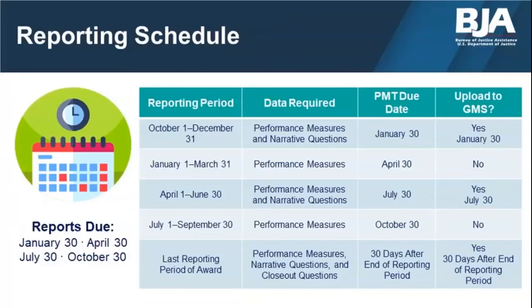This table outlines the type of data you'll be reporting each reporting period, when your reports are due in the PMT, and whether you also need to upload your reports to GMS. You'll only report on the narrative questions in January, July, and during your last reporting period of grant activity, regardless of where that falls on the schedule. The PMT is only open for data entry during the month after a reporting period closes, but is accessible year-round for you to review and edit your data, generate reports, and more. You will need to contact the PMT Help Desk to help you unlock reports as needed.